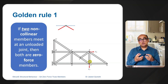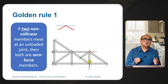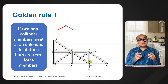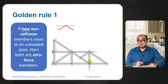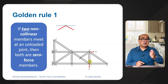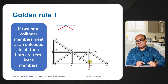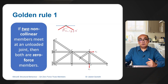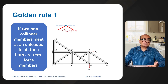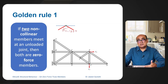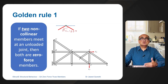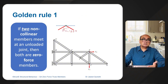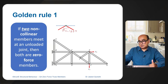Now before I go through this example I want to cover some golden rules — the basics. The first golden rule is that if two non-collinear members meet at an unloaded joint — unloaded means there shouldn't be any reaction or any force — then both are zero force members. The angle theta has to be less than 180 degrees for them to be zero, because it's very difficult for these forces to balance each other.